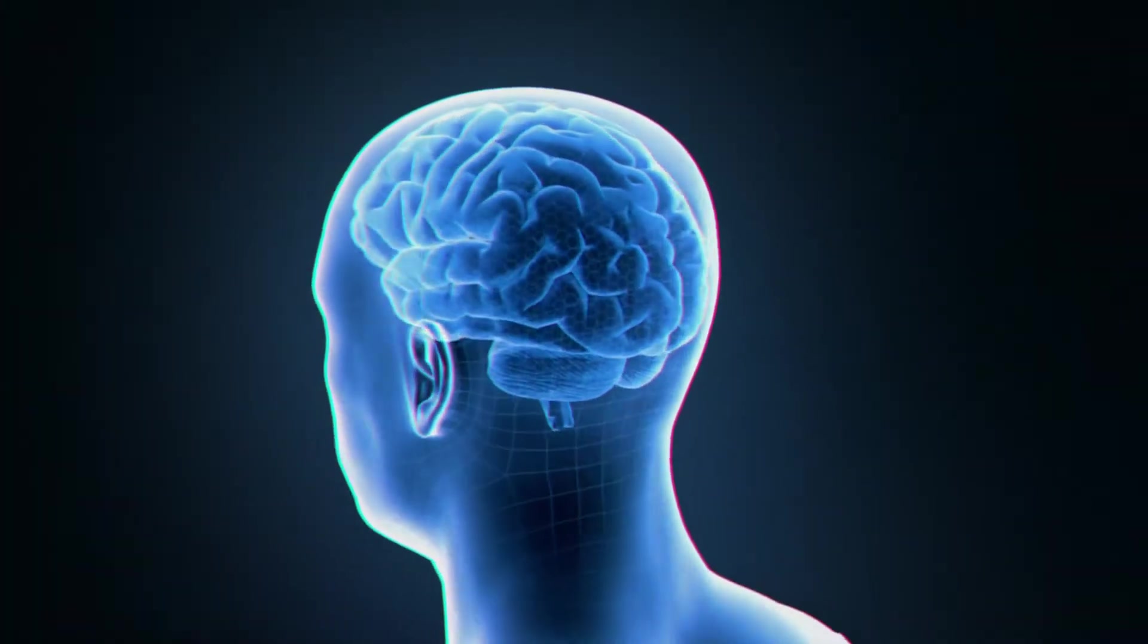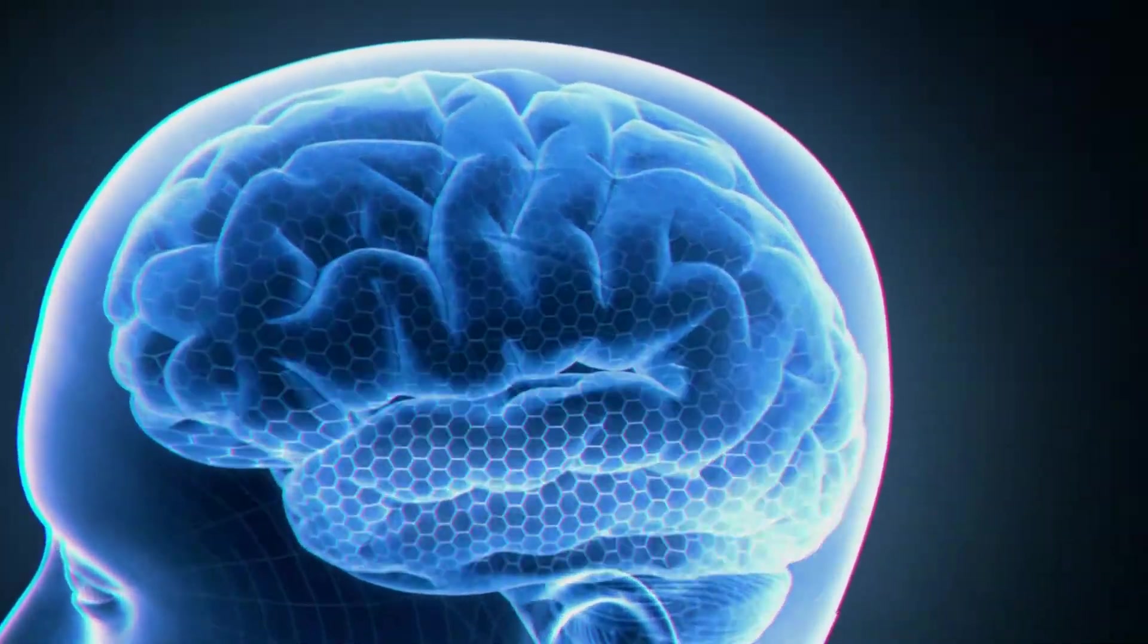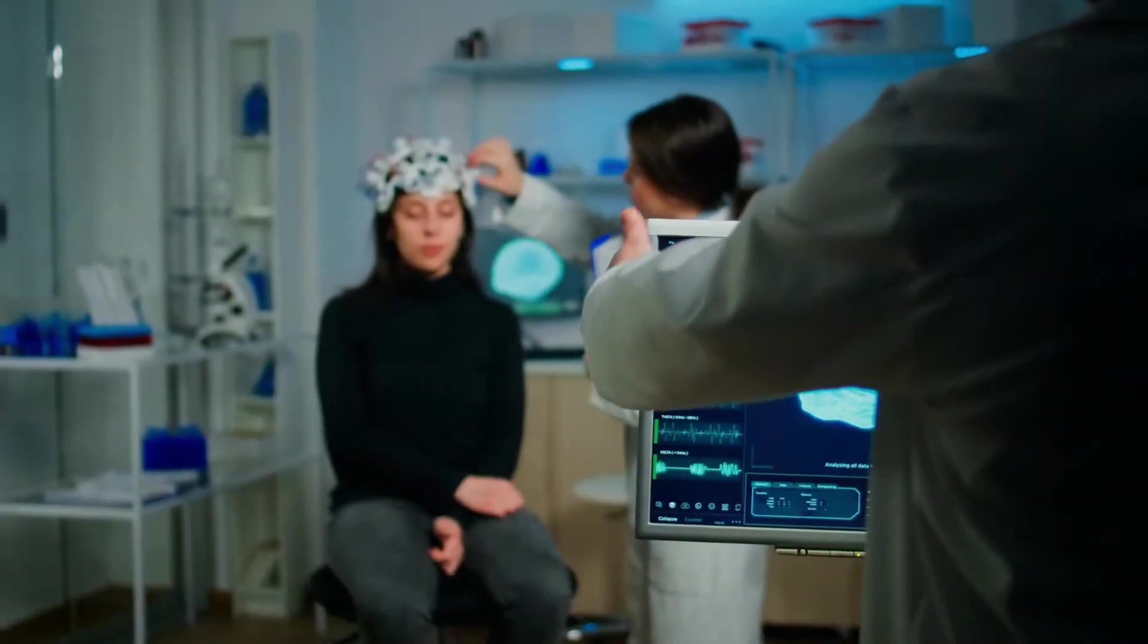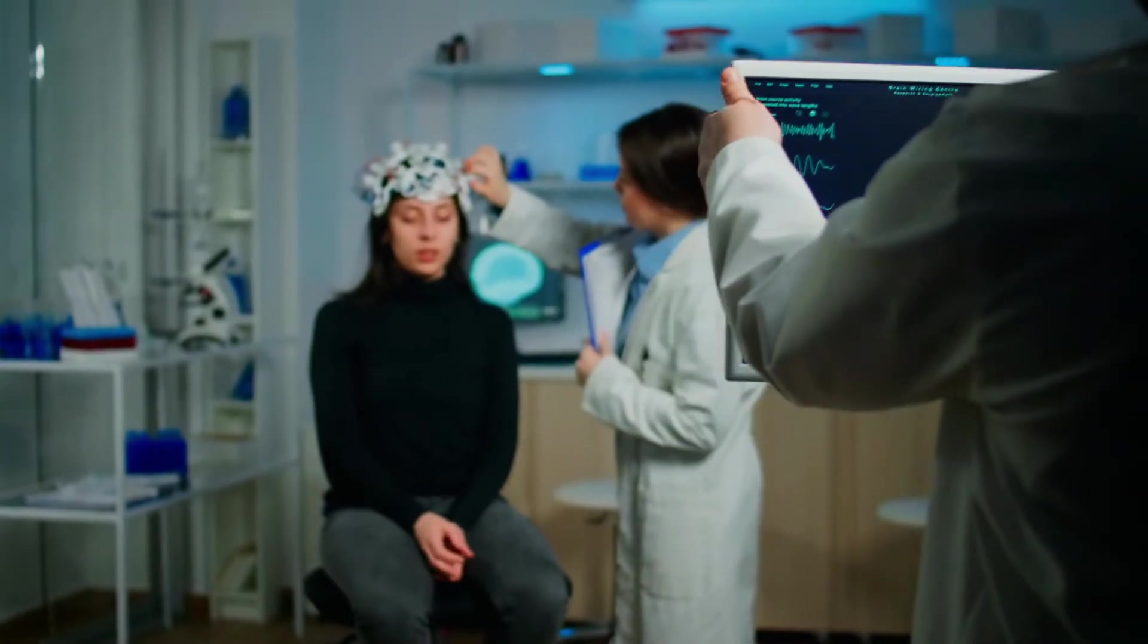The primary functions of the brain are to process and transmit information in the form of electrical signals with the help of energy. Different studies show that various parts of the brain consume a specific amount of energy.